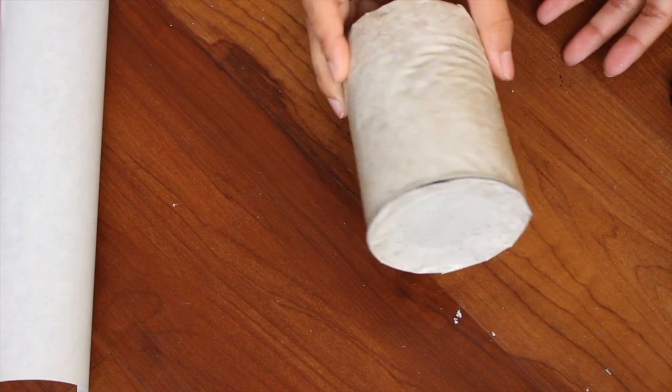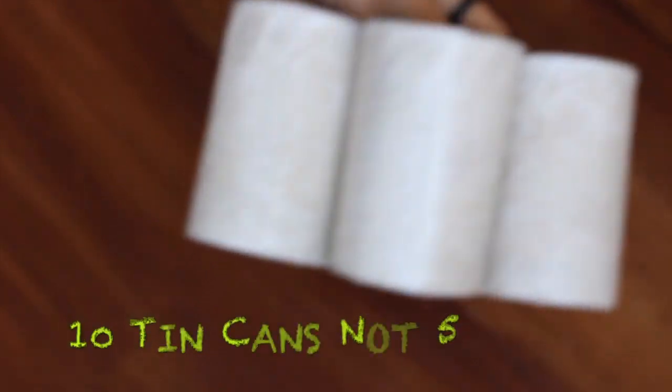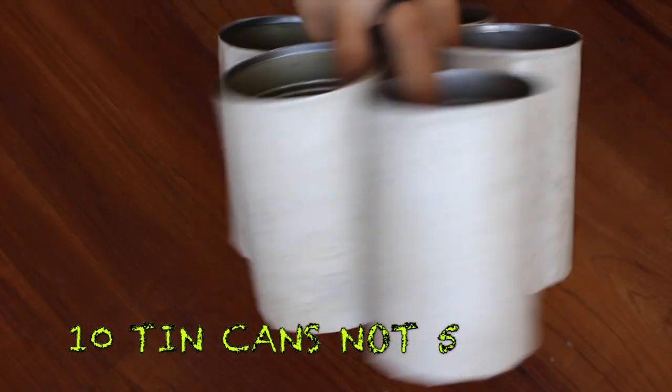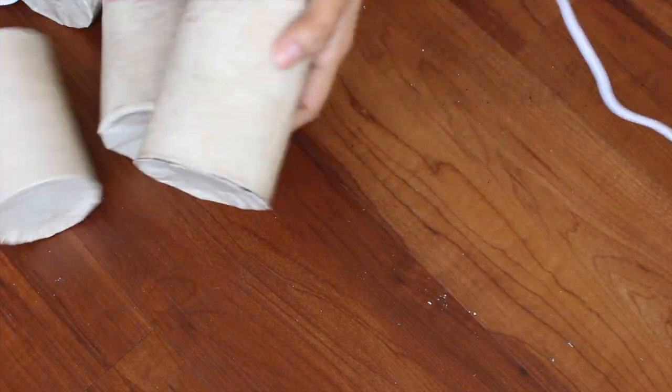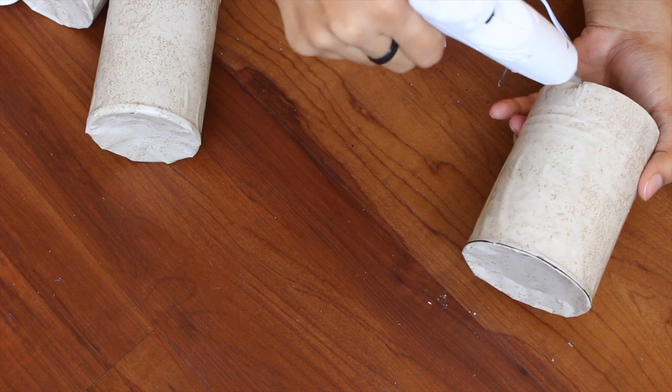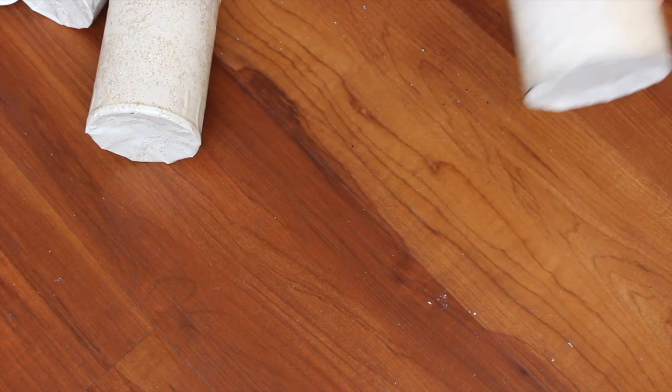So this is how it should look once I'm done with all the five tin cans. I'm taking my glue gun and gluing the two tins together, as you can see here.